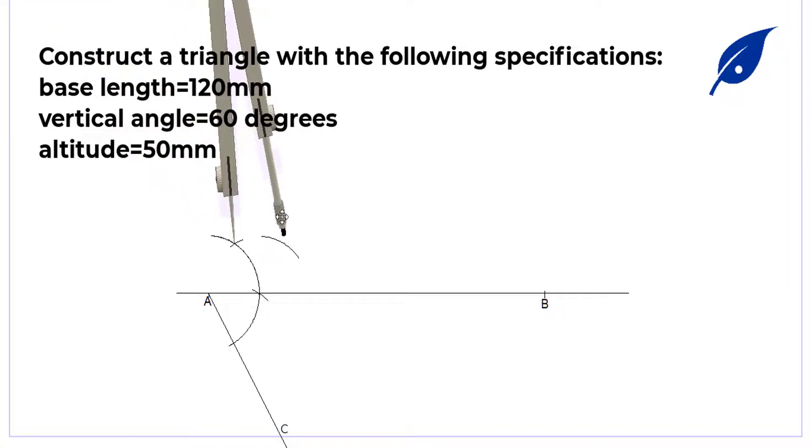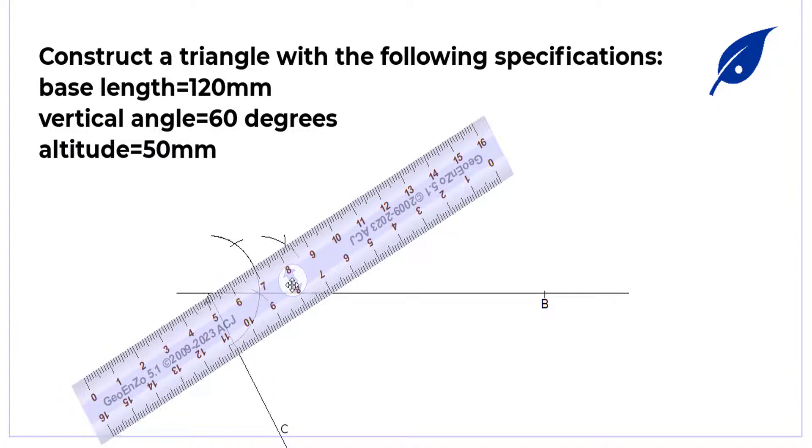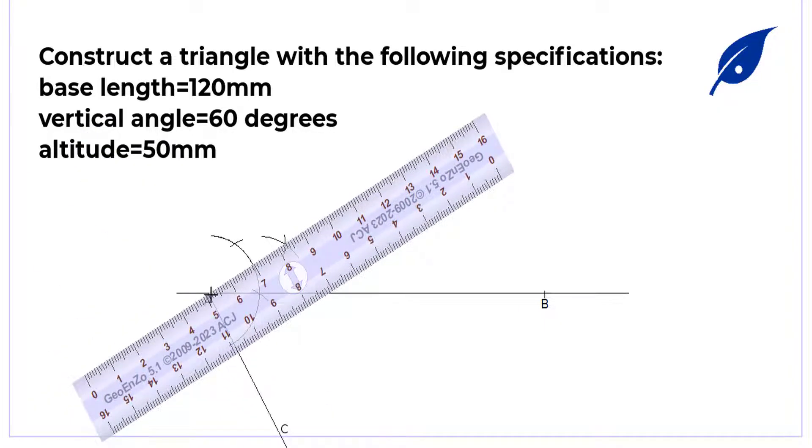Now we will construct the angle of 90 degrees, which will give us the line AD at this point.